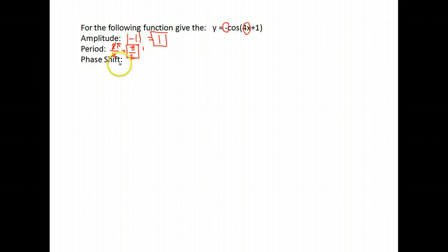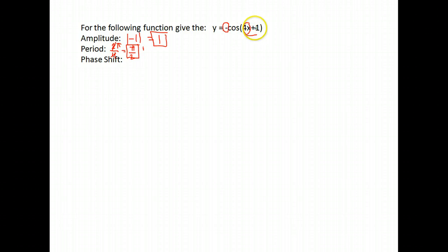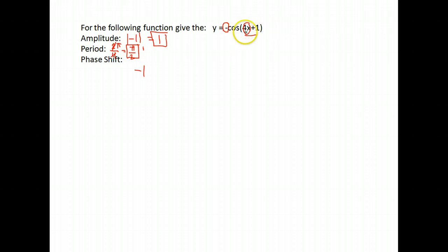And finally, our phase shift. This time we do actually have something added or subtracted, so we can determine our phase shift. To find it, you take that number that's being added or subtracted and write it with the opposite sign. It was a positive 1, so we write negative 1, and divide it by the number directly in front of our x. So our phase shift is negative 1/4.